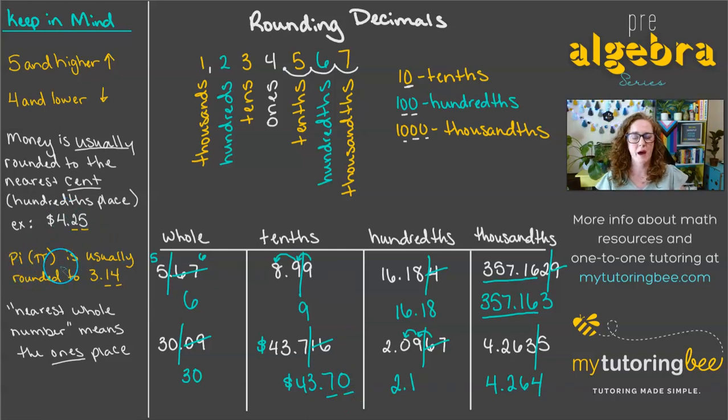If you're working with pi, if you're working with circles, usually pi itself is rounded to the nearest hundredths place. We use 3.14. And so your answer could be rounded to the nearest hundredths place if you're not told specifically what to round to.